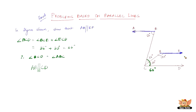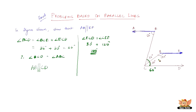Now angle ECD plus angle CEF equals 30 degrees plus 150 degrees, which equals 180 degrees. This shows that the sum of the interior angles on the same side of the transversal CE is 180 degrees. If we consider CE as a transversal, these two angles are on the same side of the transversal and their sum equals 180 degrees — therefore they are supplementary.